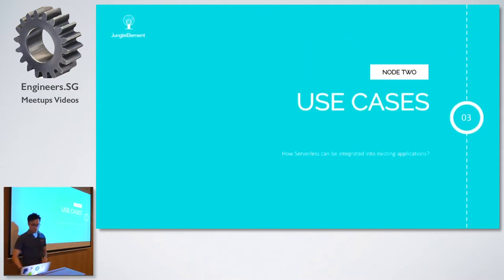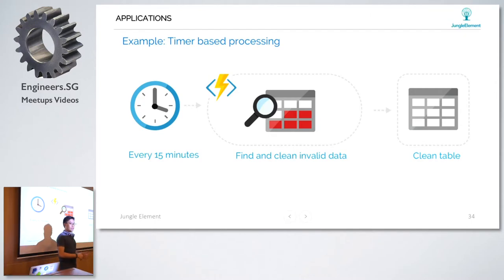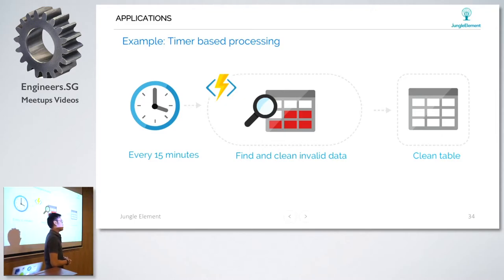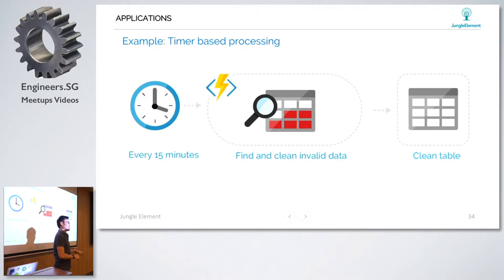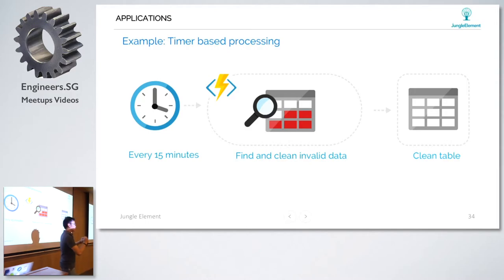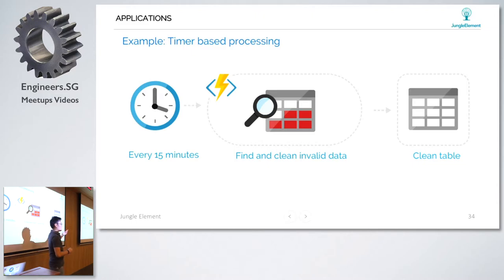Some use cases: one is timer-based. Since serverless architecture is based on events, one example is timer-based - if you want to do a cron job, you don't want to run it on a VM and build a cron task to pull every 15 minutes. What you could do is tell Azure Functions to run a function every 15 minutes - clean up the database, input from the database, clean it, output to a database. That's where the function does the heavy lifting of computation, cleaning up, removing what's not necessary, and outputting a clean database.